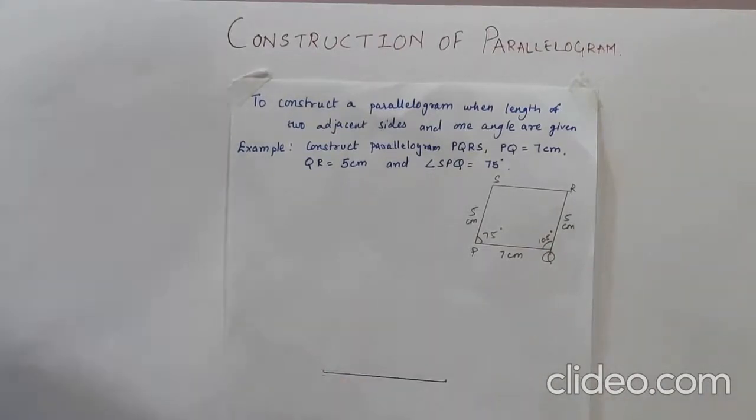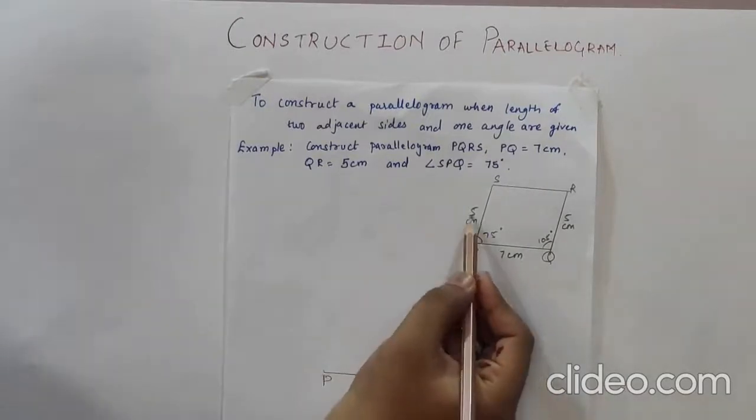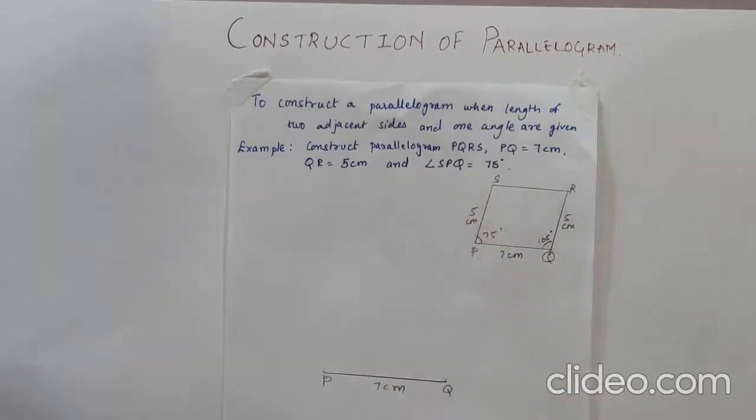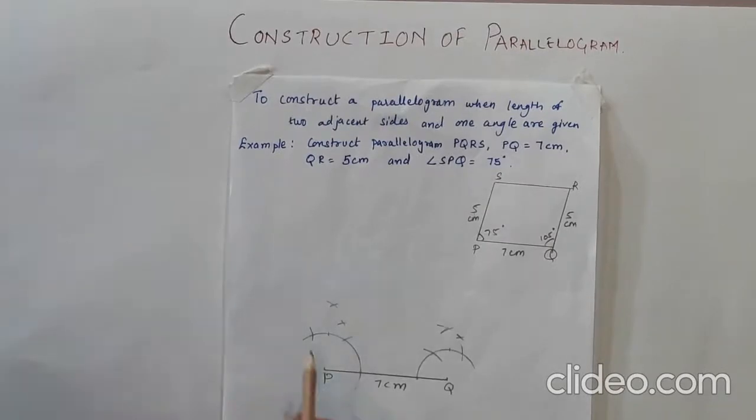So first step of this construction is PQ which is 7 cm. Now what we have to do? First, always whenever we have side and angle together, first we have to always construct the angle and then we have to cut the arc of that side. So let us construct 75 degree.